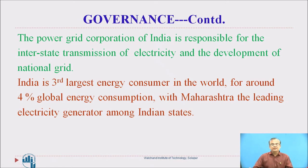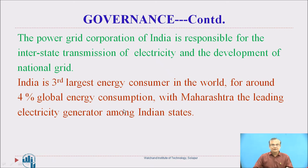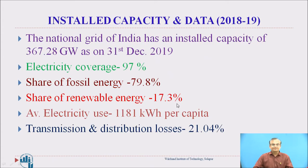India is the third largest energy consumer in the world. We are a developing country and consume about 4% of global energy. The National Grid of India has an installed capacity of 367.28 gigawatts, as of 31st December 2019.